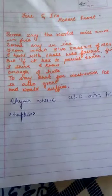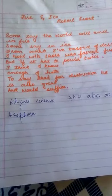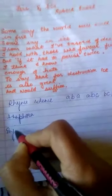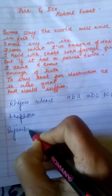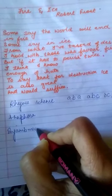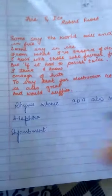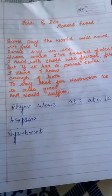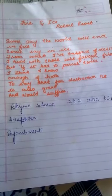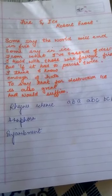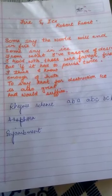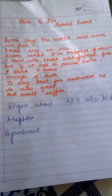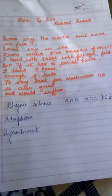Another literary device used is enjambment. Enjambment is when a thought or clause does not come to an end at a line break, but is carried on to the next line.